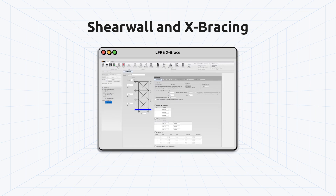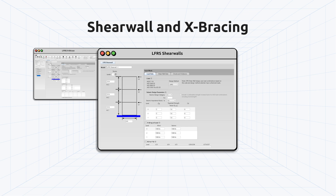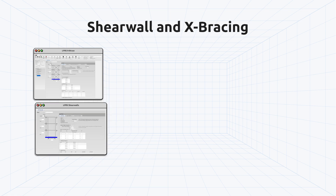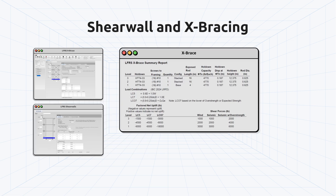LFRS X-Brace and LFRS Shear Walls have been updated to include the S400-20 and S240-20 codes, and AISI S100-16 with S2-20 provisions. The number of screws required for each hold-down has been added to the LFRS Simple X-Brace and LFRS Simple Shear Walls Summary reports for convenience.